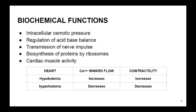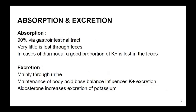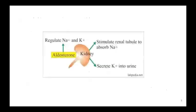In disease states of potassium like hypokalemia, calcium inward flow increases and thereby contractility decreases. Moving on to absorption and excretion: absorption is via the gastrointestinal tract; very little is lost through feces, but in case of diarrhea a good proportion of potassium is lost. Excretion is mainly through urine. Aldosterone acts on the kidney, stimulating renal tubules to absorb sodium and secrete potassium into the urine.